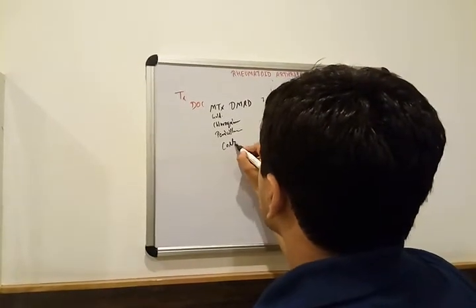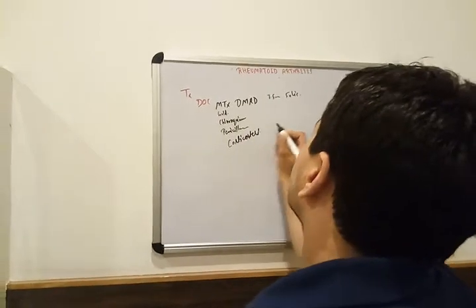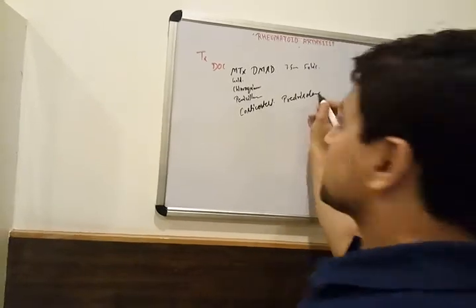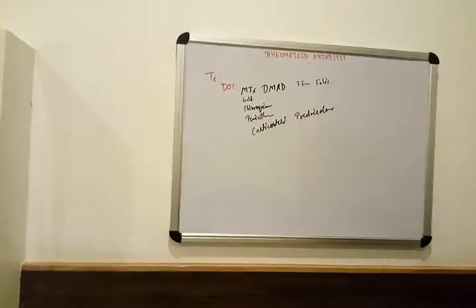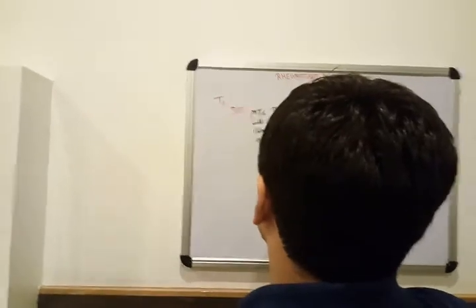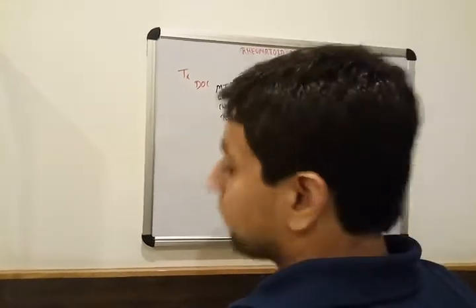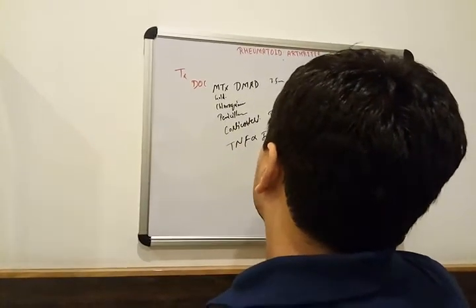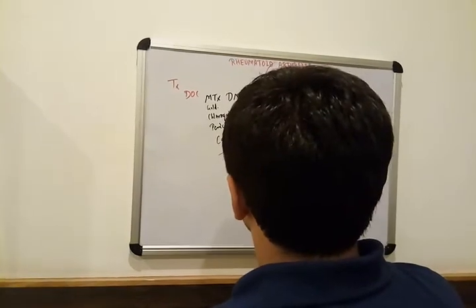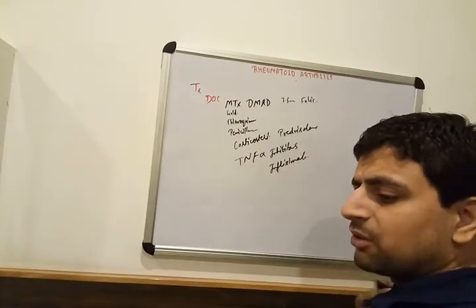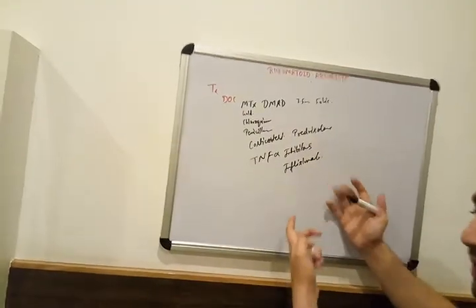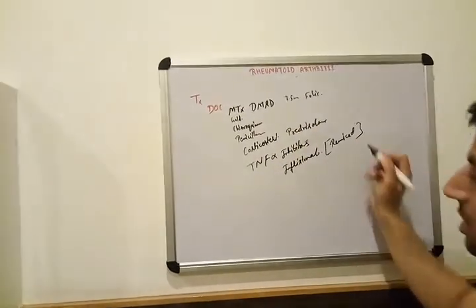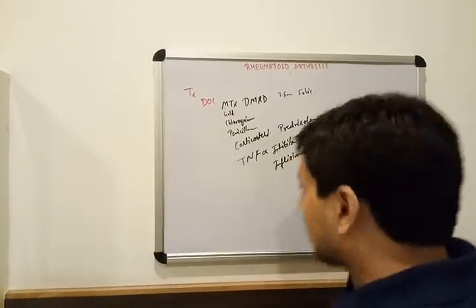We can also give corticosteroids such as prednisolone. If the patient is not responding, we can give TNF-alpha blockers — inhibitors such as infliximab, also known by the brand name Remicade, which is produced by genetic engineering.